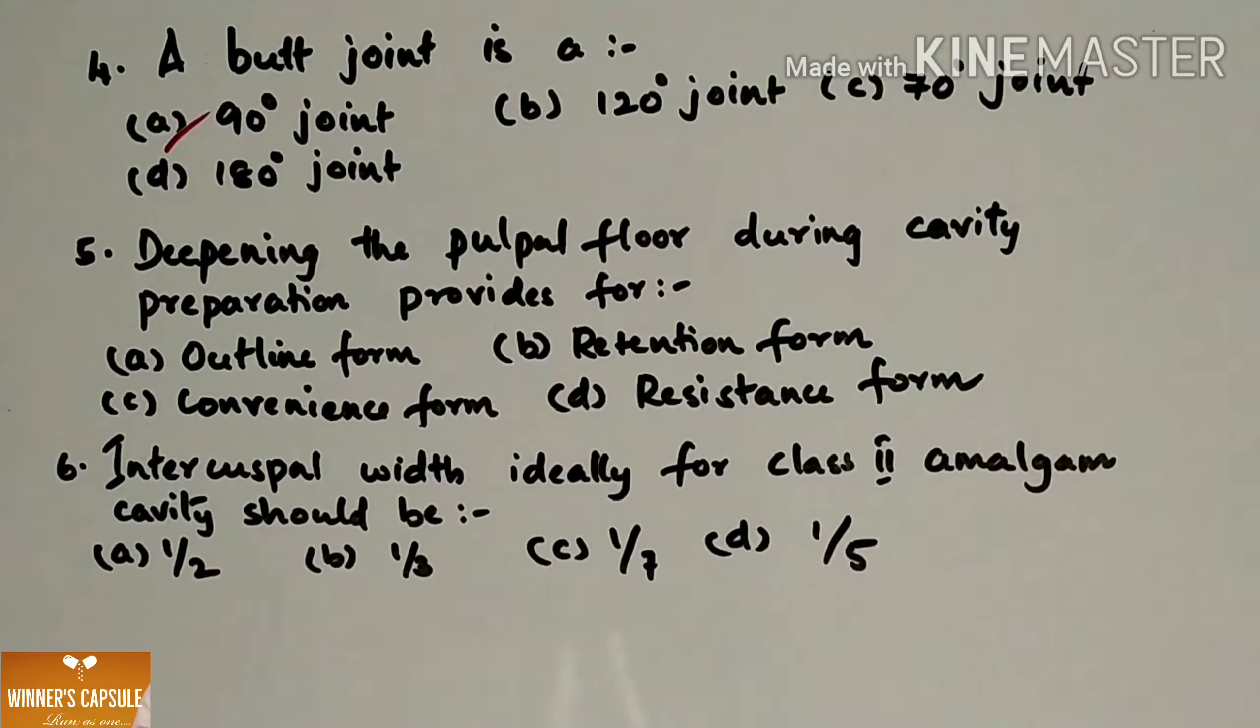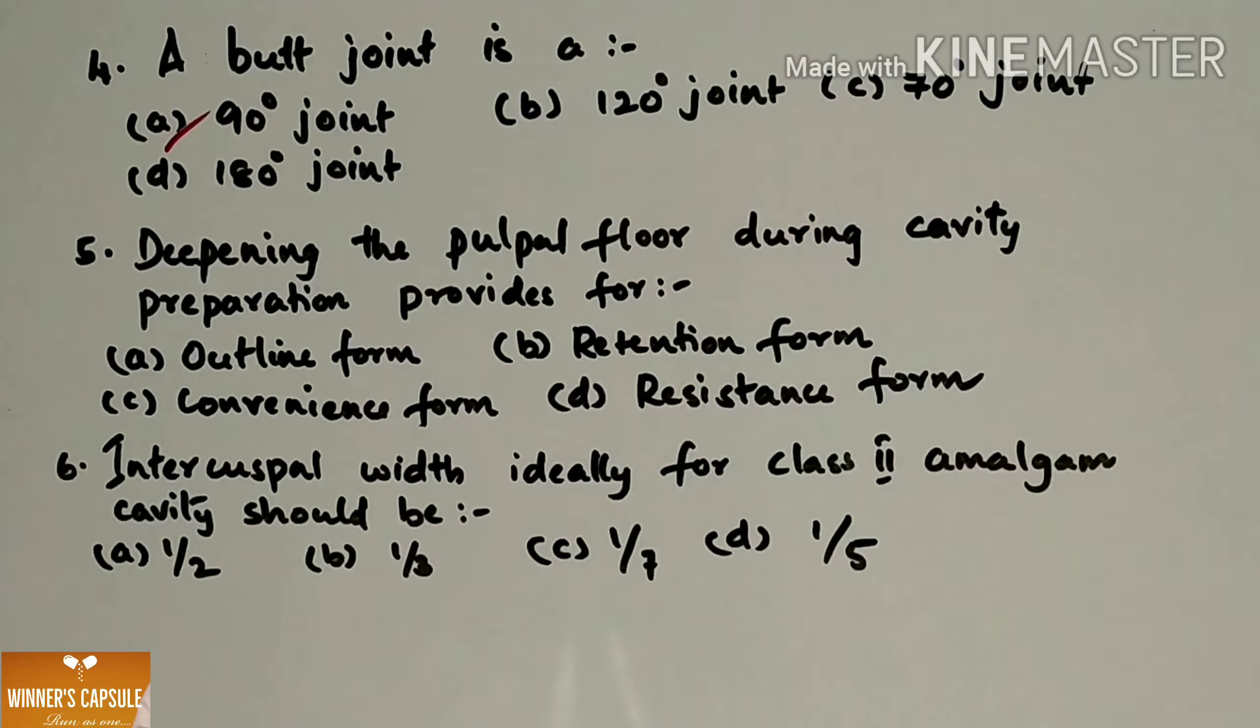In butt joint, the cavosurface angle is 90 degrees. Cavosurface angle is the angle at the junction of the walls of the cavity preparation and external surface of the tooth. This butt joint is advocated mainly in amalgam restoration, also advocated in silicate and porcelain restoration.